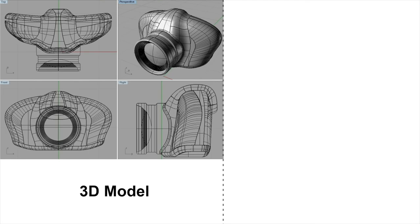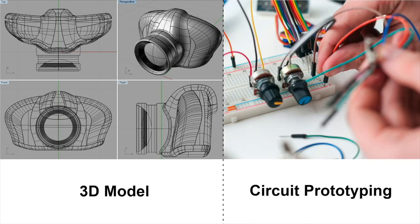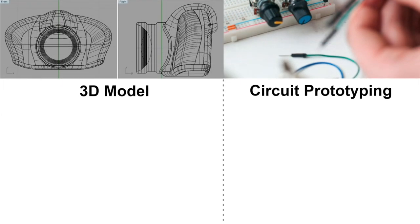To do so, we usually have two separate workflows. One is to create a 3D model physical form, and the second one is to create a functional circuit. These two workflows are usually independent from each other. For example, in a product team, there are different people doing these two different workflows: mechanical designers create the physical form, and electrical engineers work on prototyping the circuits.